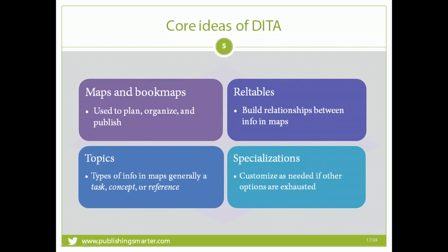Maps and book maps are ways to organize, plan, and publish your information — they build a hierarchy. Once you've organized your plan and figured out what you're going to publish, do some brainstorming and come up with a lot of topics. Those are the smaller types of information that go into the map, usually organized into task, concept, or reference.